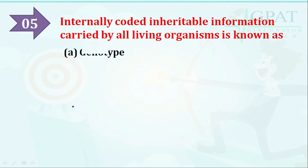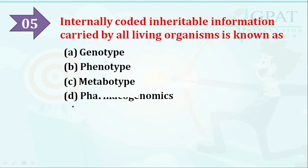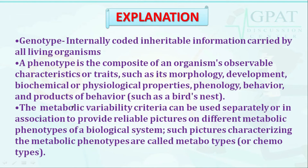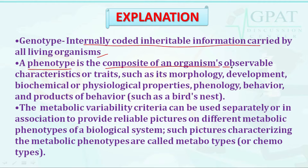The next question: internally coded, inheritable information carried by all living organisms is known as genotype. The correct answer is genotype. Phenotype is the composite of an organism's observable characteristics or traits, such as morphology, development, biochemical or physiological properties, phenology, behavior, and products of behavior such as a bird's nest.